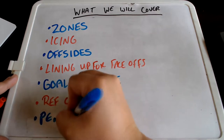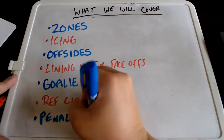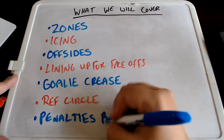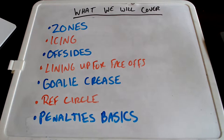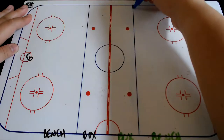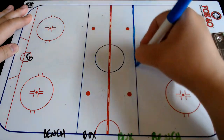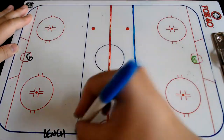Today we're going to be covering zones, icing, offsides, lining up for face-offs, the goal crease, the ref circle, and the basics of penalties. So when we're talking about zones, these are all based off of the blue lines.